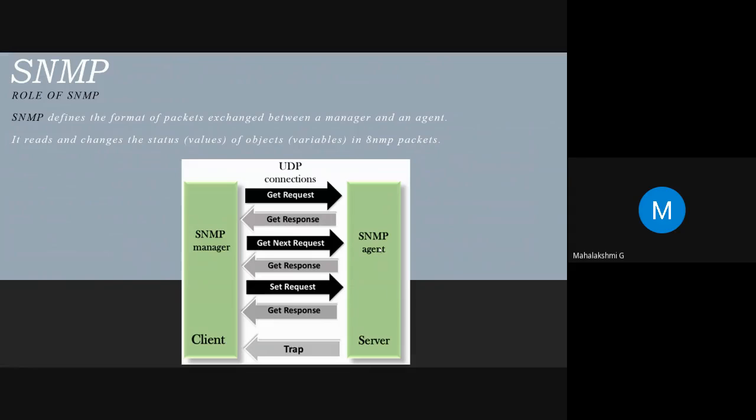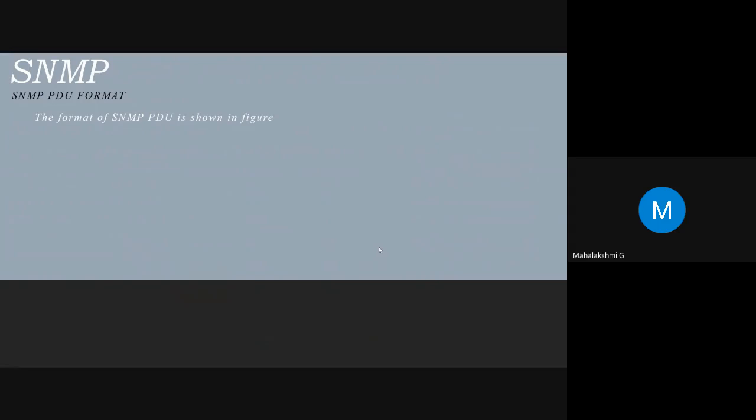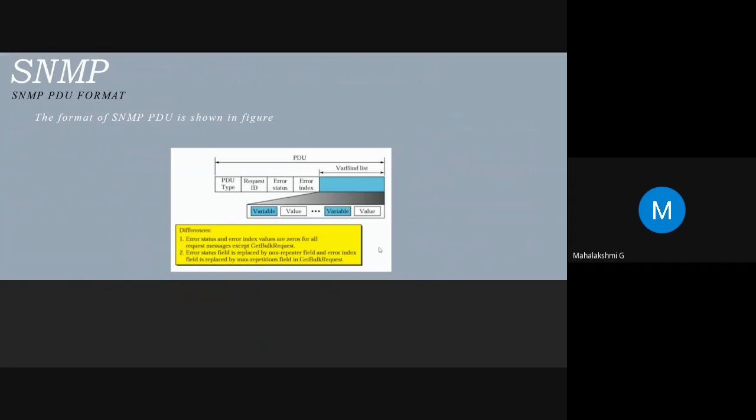GetRequest and getNextRequest are sent from the SNMP Manager to the SNMP Agent, while getResponse, setResponse, and trap are sent from the SNMP Agent to the SNMP Manager, as shown in the figure. The format for the eight SNMP PDUs is shown in the figure, and the getBulkRequest PDU differs from others in two areas, also shown in the figure.